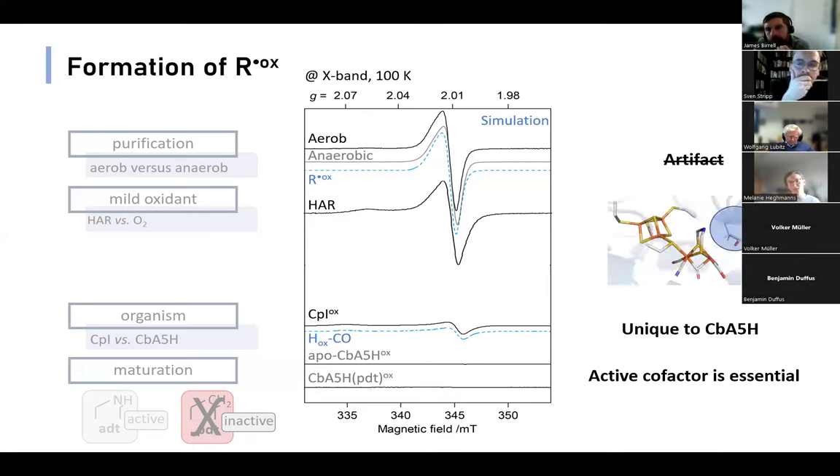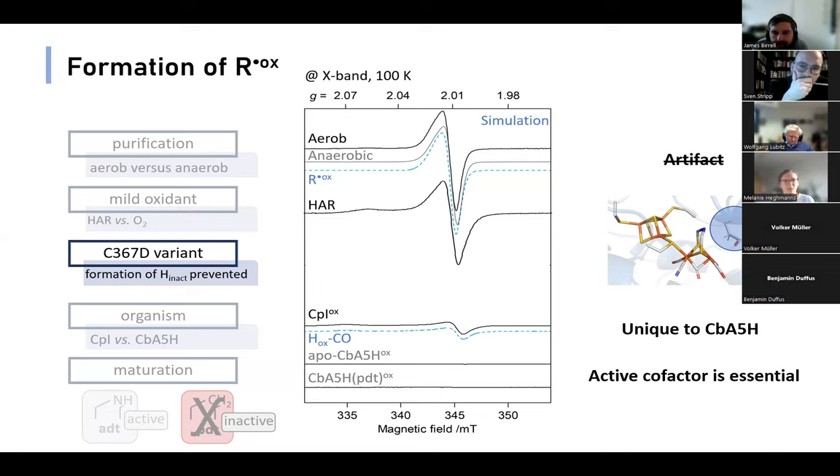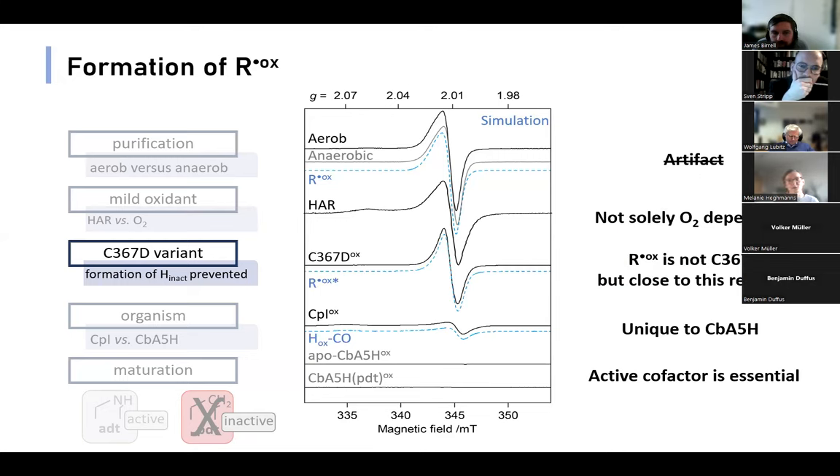Lastly, we looked at the cysteine residue which is very close to the H-cluster and involved in formation of the inactive state. When we mutated it to an aspartic acid residue, the formation of H-inact is prevented, but not so the one of R^ox. However, when you look closely at the line shape, it is slightly perturbed in comparison to R^ox. This indicates that R^ox might be close to the cysteine residue as it affects its electronic structure.